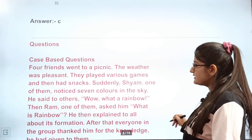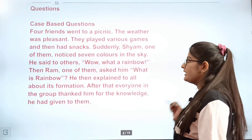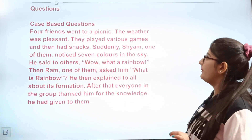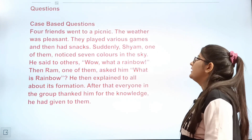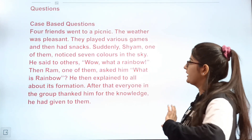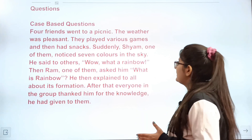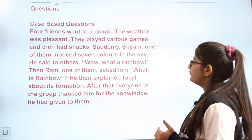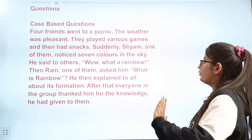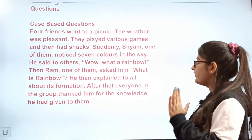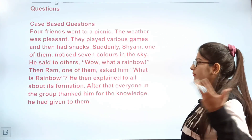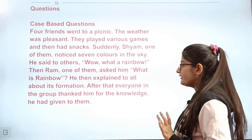Question 6 is a case-based question. Four friends went on a picnic. Suddenly, Shyam noticed seven colors in the sky and said 'what a rainbow!' Ram asked what a rainbow is, and Shyam explained its formation to the group.